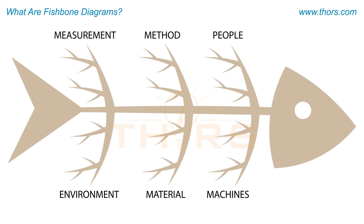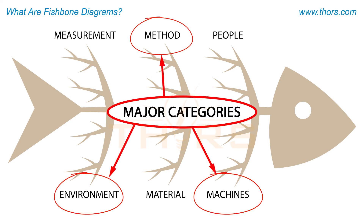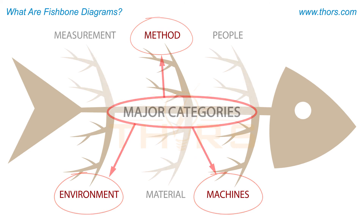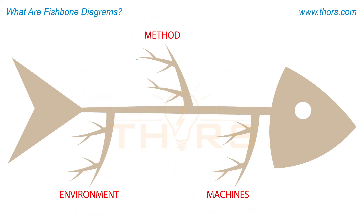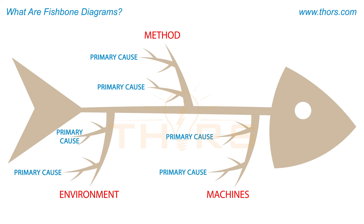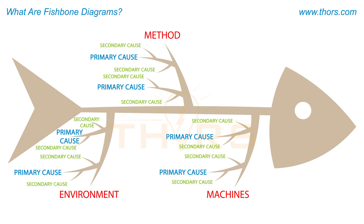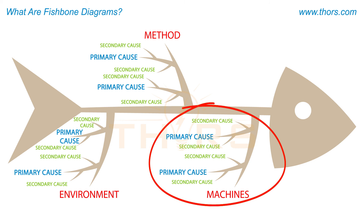To determine the cause of the central issue, one or more of the major categories will be identified and used to group each of the variables. The primary causes related to each category are then brainstormed. Upon further brainstorming, these primary causes will often lead to secondary causes, as deeper level problems are revealed. After all possibilities are generated, further analysis is performed to identify the final root cause.